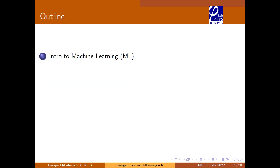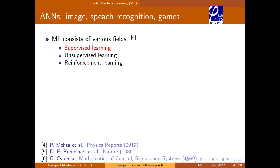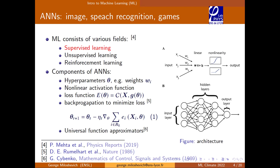I'll quickly jump through an introduction to machine learning, how it is used in computational earth sciences, and then talk about my work in this group and future work. Machine learning consists of various fields — we'll be interested in supervised learning. As you know, a feedforward neural network optimizes a cost function using backpropagation to train the weights.